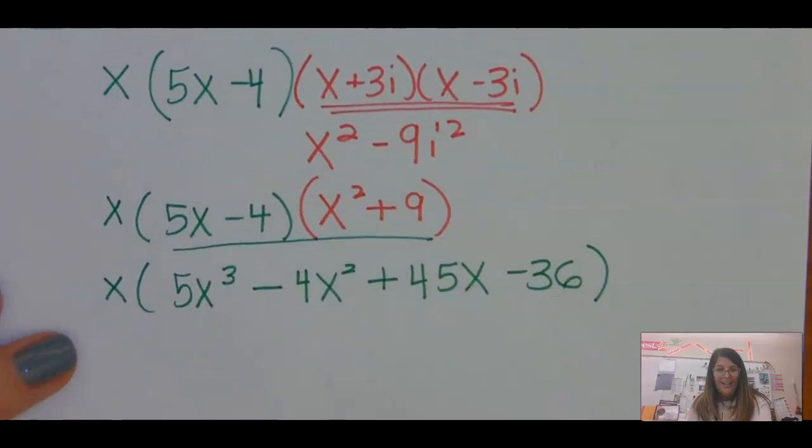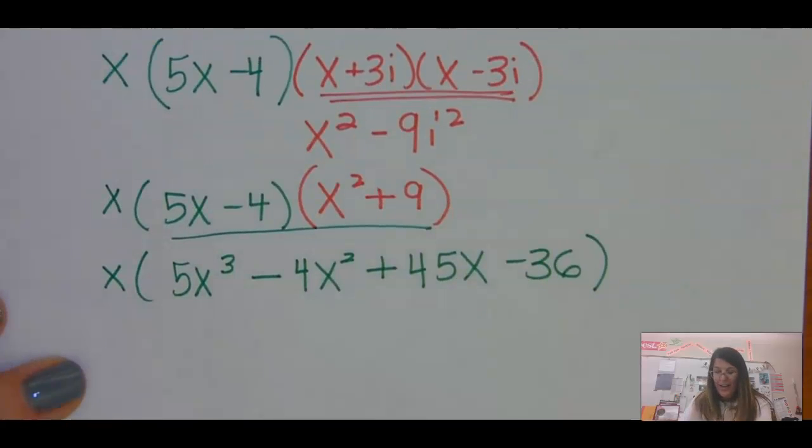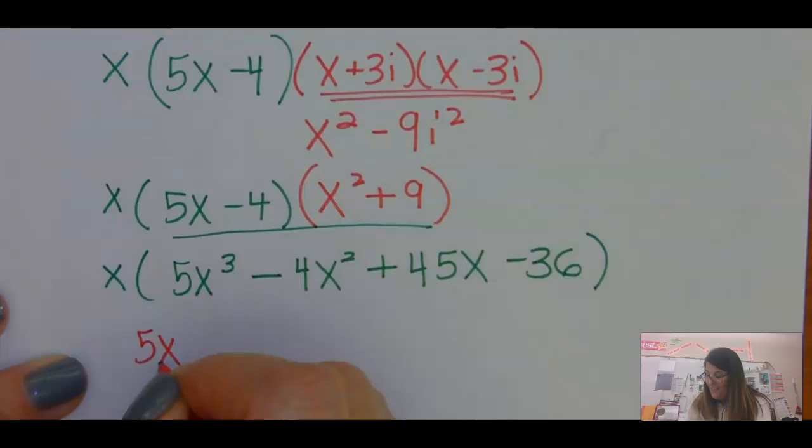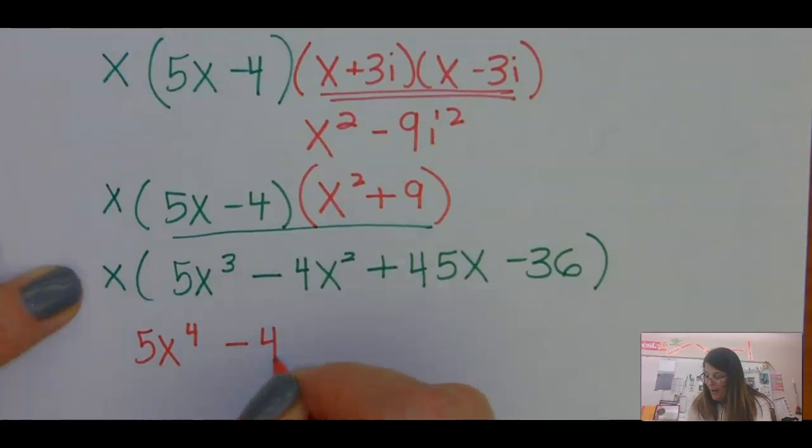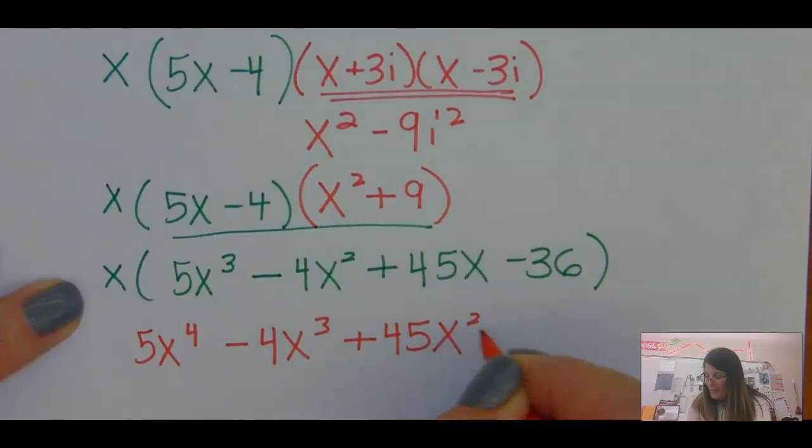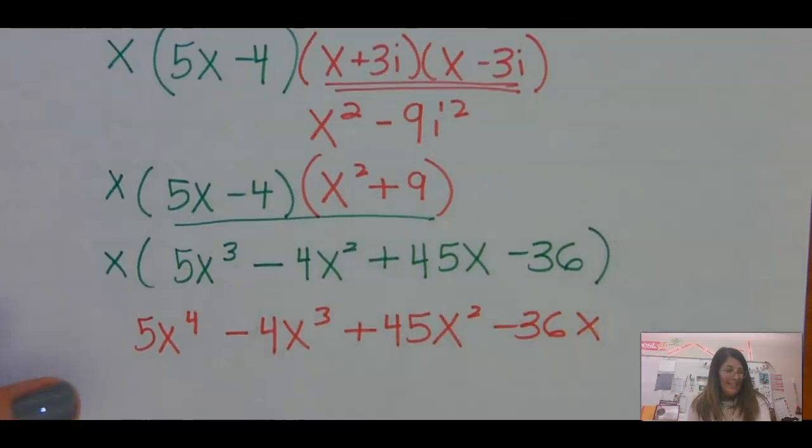And now, I've got to take the x that was on the outside and put it all together. 5x to the fourth minus 4x cubed plus 45x squared minus 36x.